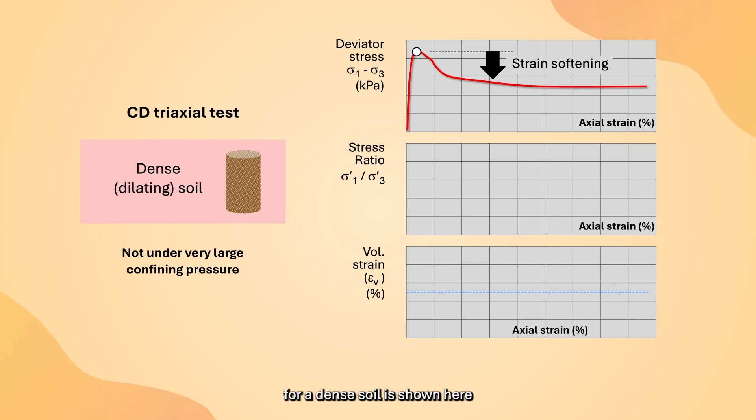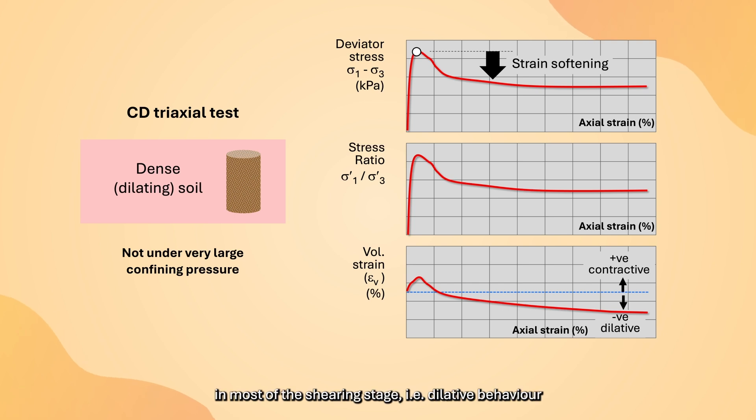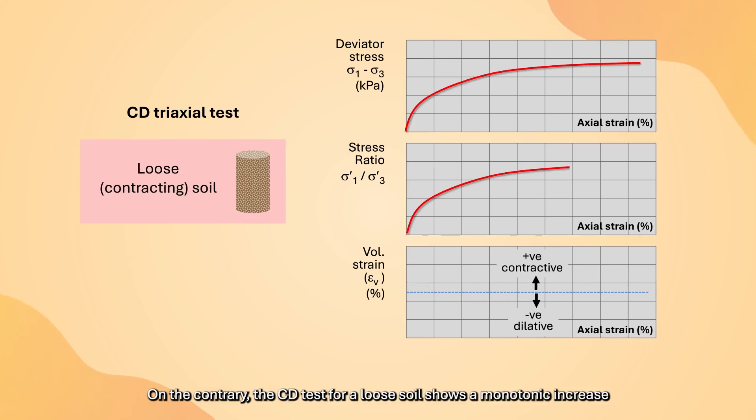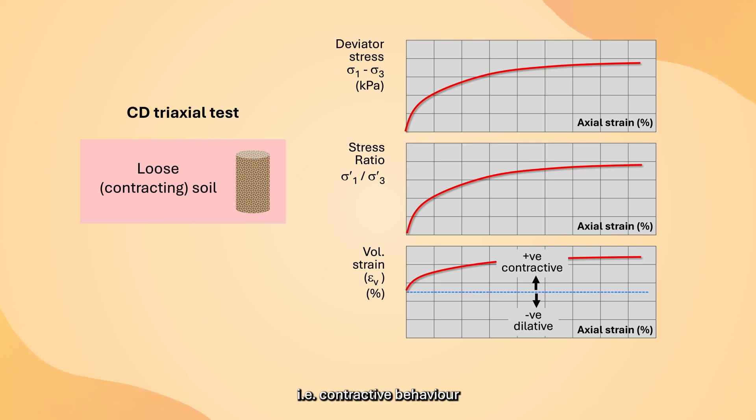Typical CD test result for a dense soil as shown here. A dense soil shows a peak in deviator stress and then exhibits strain softening after the peak is reached. The volume of a dense soil will increase in most of the shearing stage, that is, dilative behavior. On the contrary, the CD test for a loose soil shows a monotonic increase in deviator stress and a monotonic decrease in volume upon shearing, that is, contractive behavior.